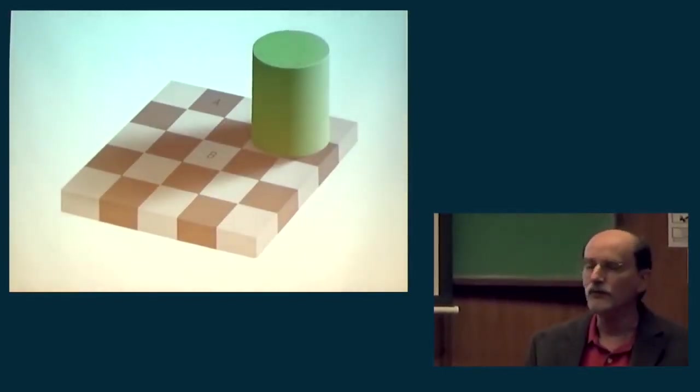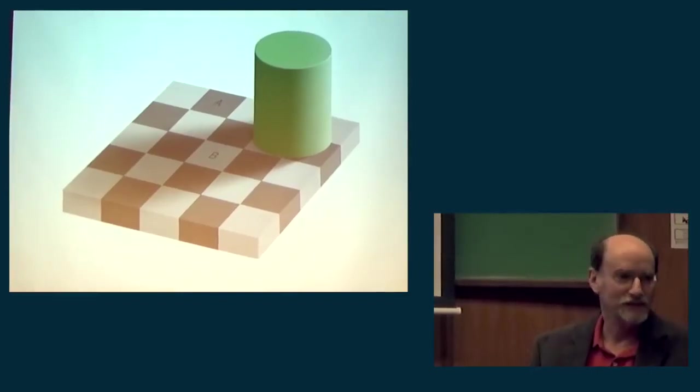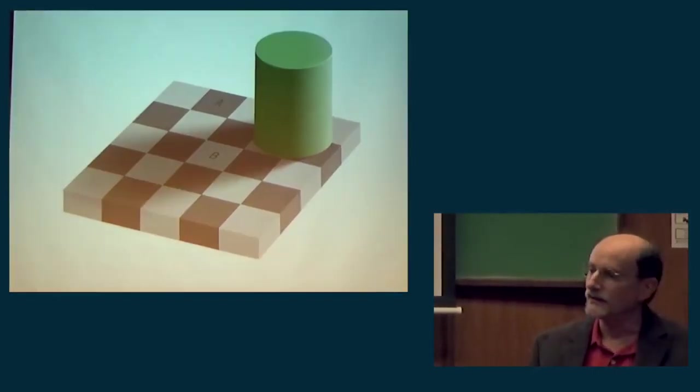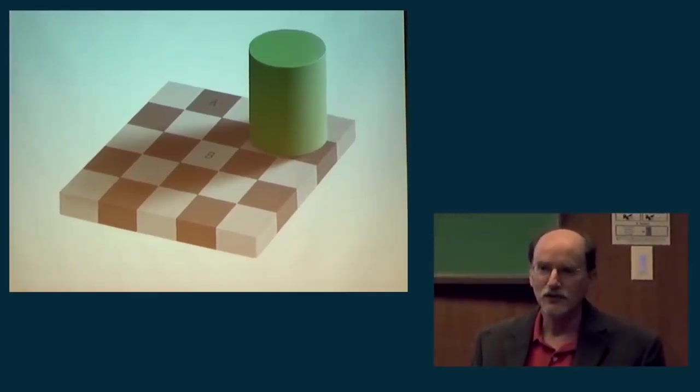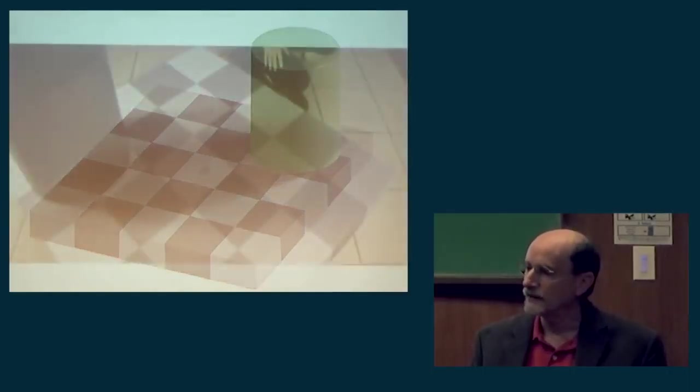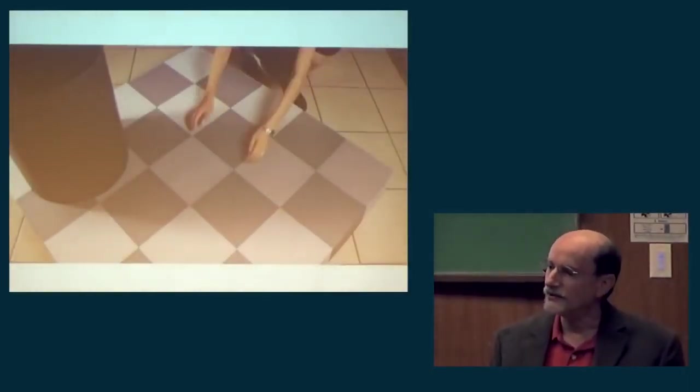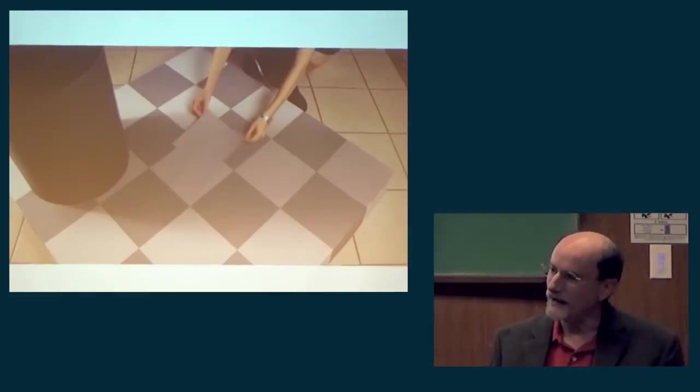Here's one of the many ways of demonstrating that what you perceive is not reality. This is a famous optical illusion where tiles A and B are the same color, but they don't look that way. Here's the same thing animated to show that it is the same color, just doesn't look that way.